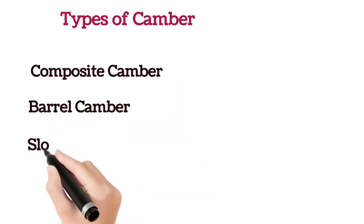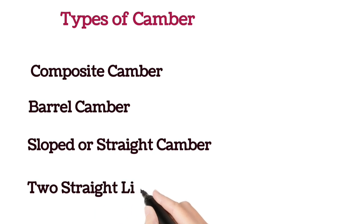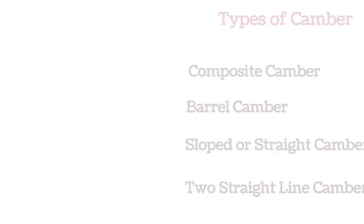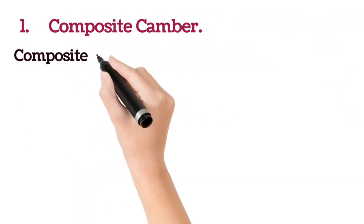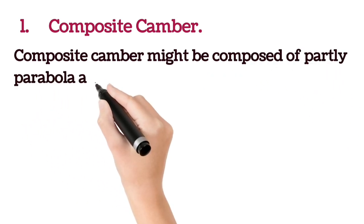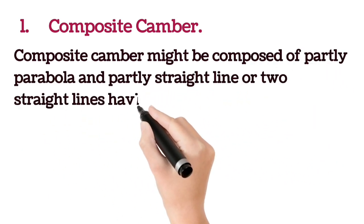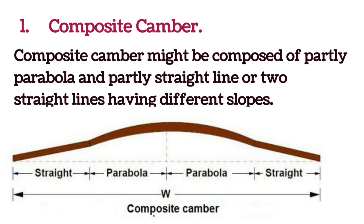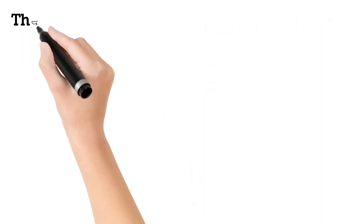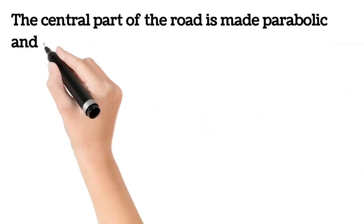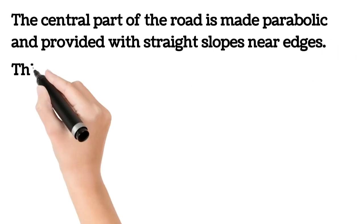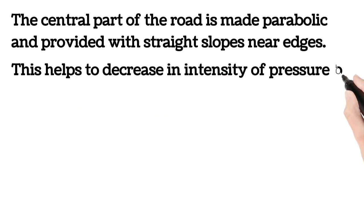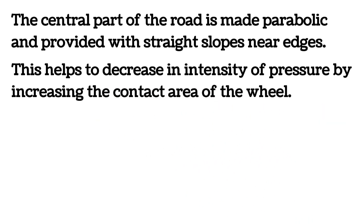There are four types of camber: composite camber, barrel camber, slope or straight camber, and two straight line camber. Composite camber is composed of partly a parabola and partly straight lines, or two straight lines having different slopes. The parabolic portion is provided at the center whereas at the edges the slope is given by a straight line. This helps to decrease intensity of pressure by increasing the contact area of the wheel.